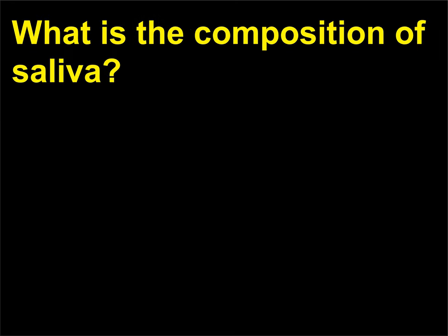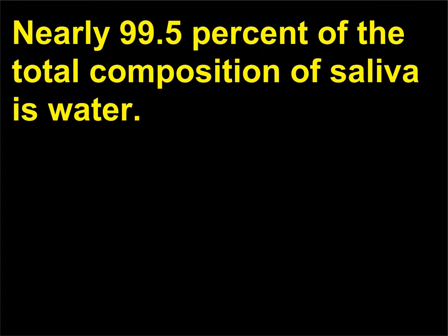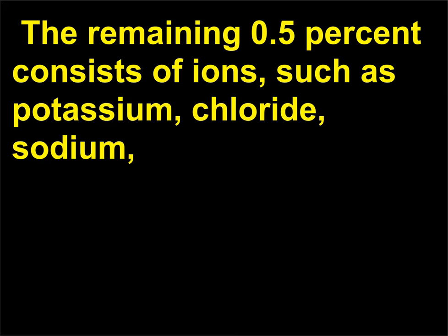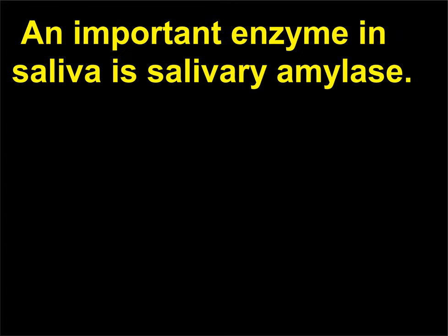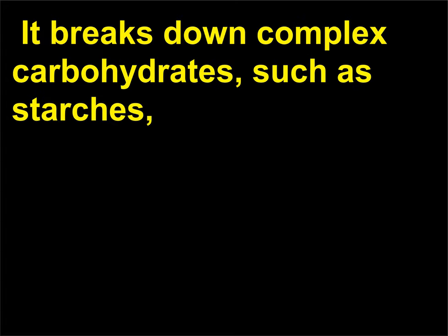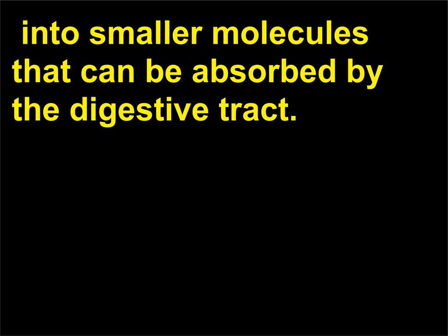What is the composition of saliva? Nearly 99.5% of the total composition of saliva is water. The remaining 0.5% consists of ions such as potassium, chloride, sodium, and phosphates, which serve as buffers and activate the enzymatic activity. An important enzyme in saliva is salivary amylase, which breaks down complex carbohydrates such as starches into smaller molecules that can be absorbed by the digestive tract.